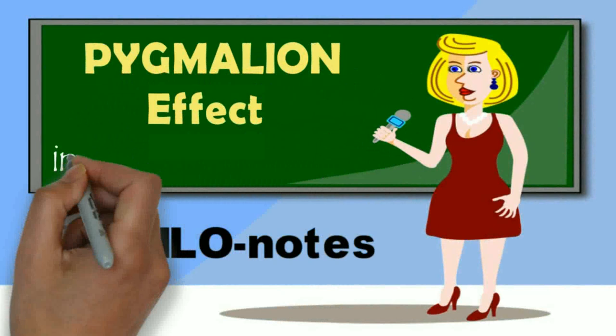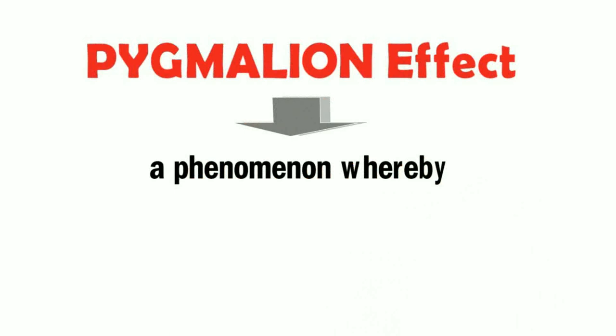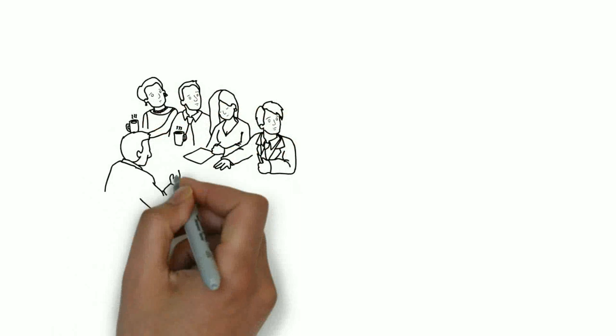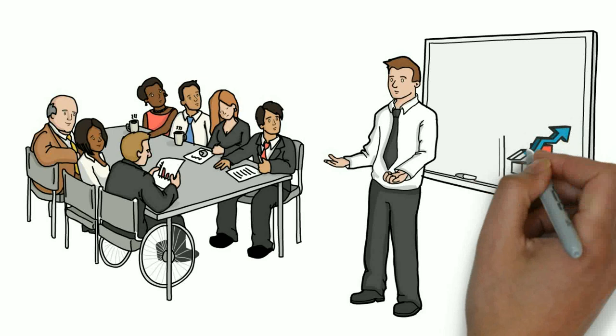In this video, we will talk about the Pygmalion effect in the classroom. The Pygmalion effect refers to the phenomenon whereby one's positive expectations of another can come to serve as a self-fulfilling prophecy. In other words, what we expect of another is more likely to occur because we are inclined to act in ways that make the expected outcome occur.